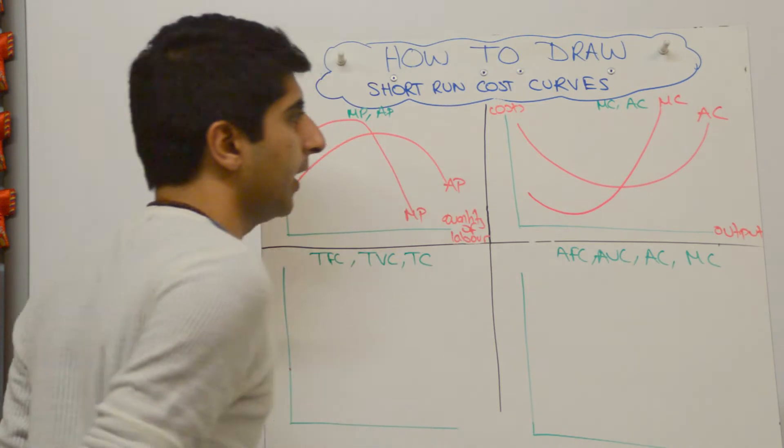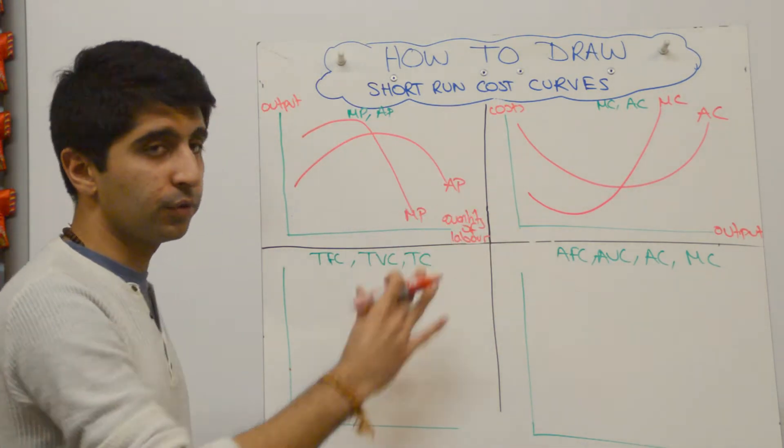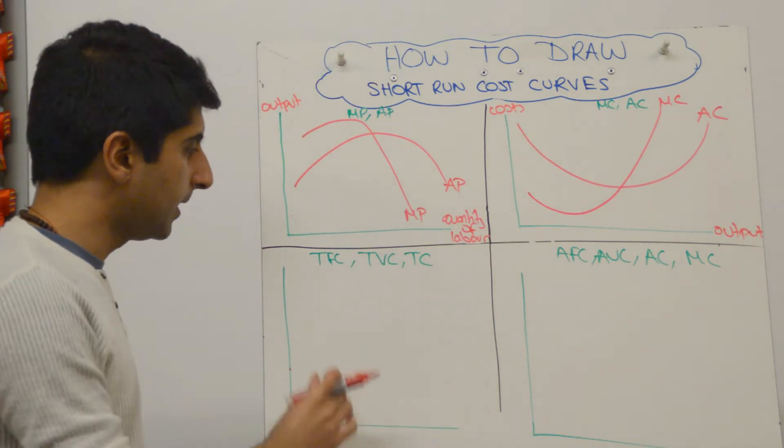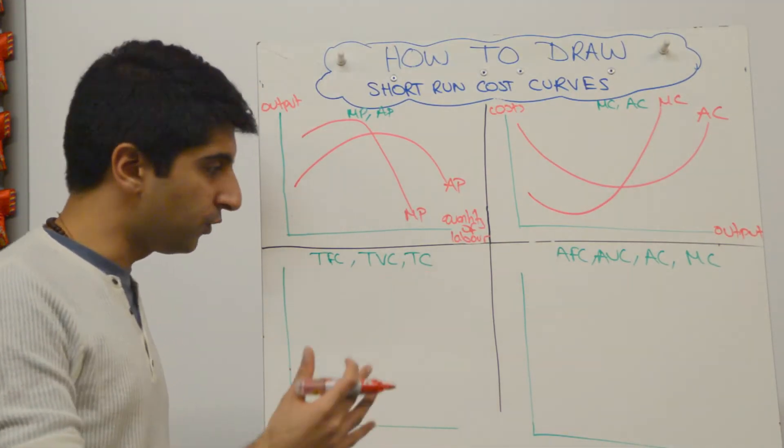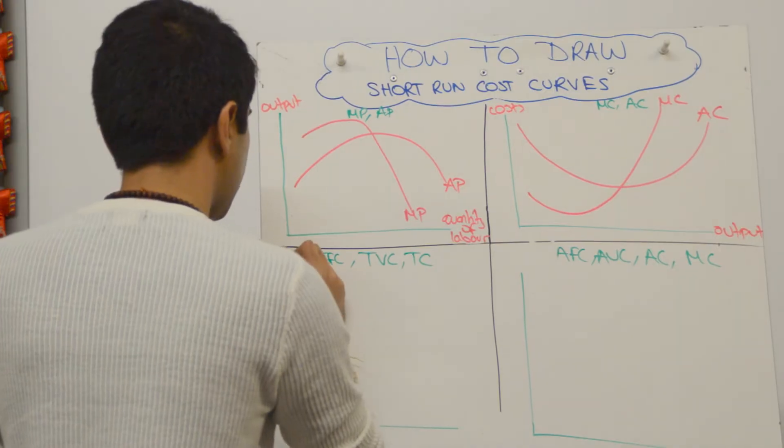There you go. Okay, so that's how you construct that one, very useful to show diminishing returns. We now move on to total fixed cost, total variable cost, total cost—useful diagrams to know how to draw. So again, we label costs and output.